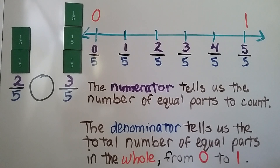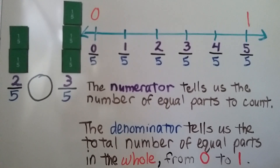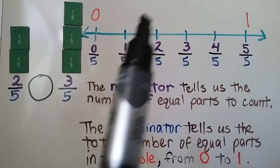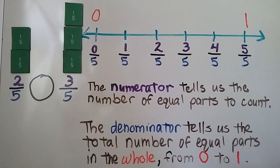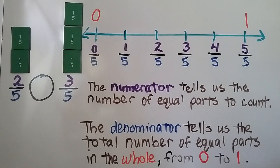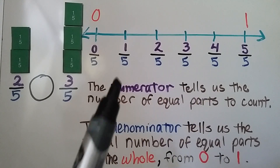The numerator tells us the number of equal parts to count. So that would be 1, 2 fifths. And for 3 fifths, we'd go 1, 2, 3 fifths. The denominator tells us the total number of equal parts in the whole — from 0, or 0 fifths, to 1, or 5 fifths. So this denominator is telling us the number line is split into fifths.